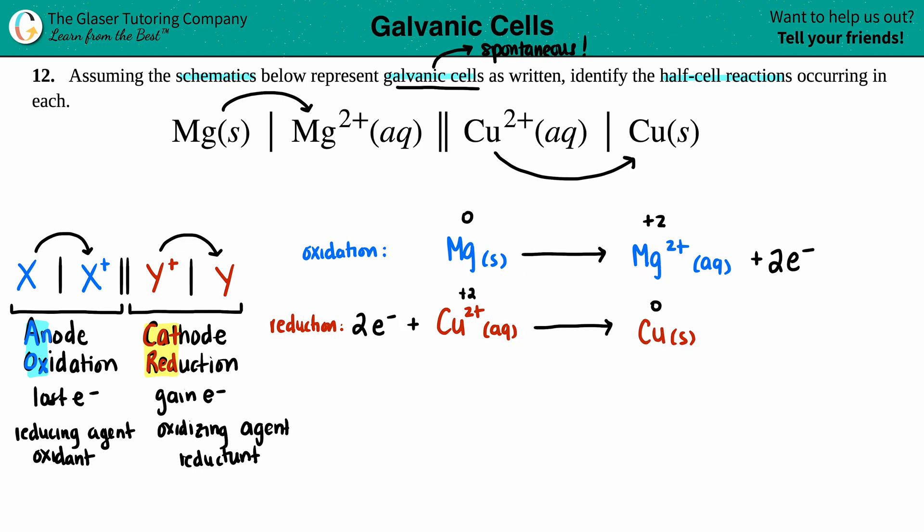So if we want to say, you know, what was our oxidant or what was our reducing agent, it would be the one that's undergoing oxidation, so it would be Mg solid. And then your reductant, aka your oxidizing agent, would be the Cu²⁺. So that answers that if that comes up on a quiz or test.